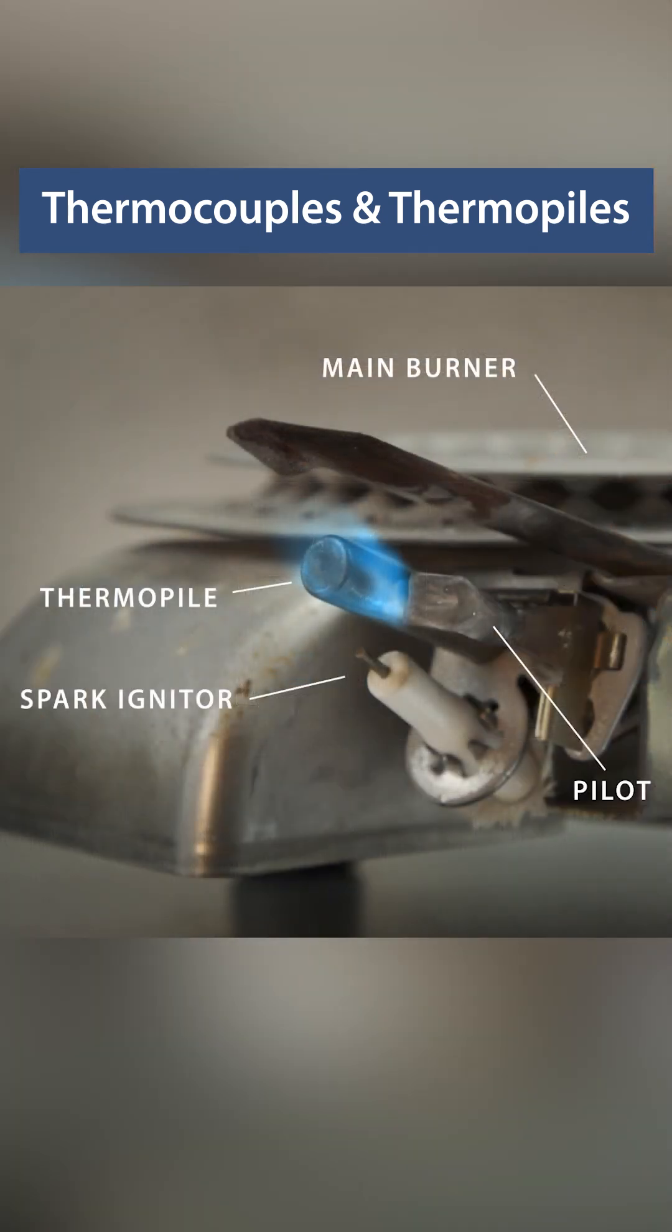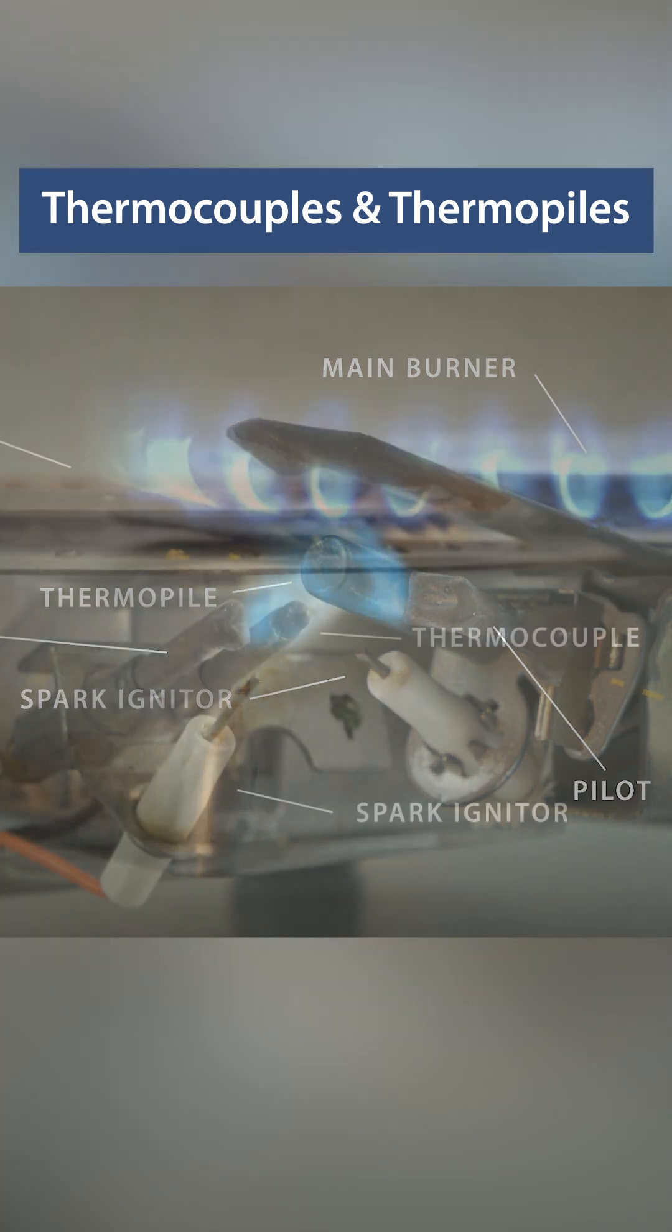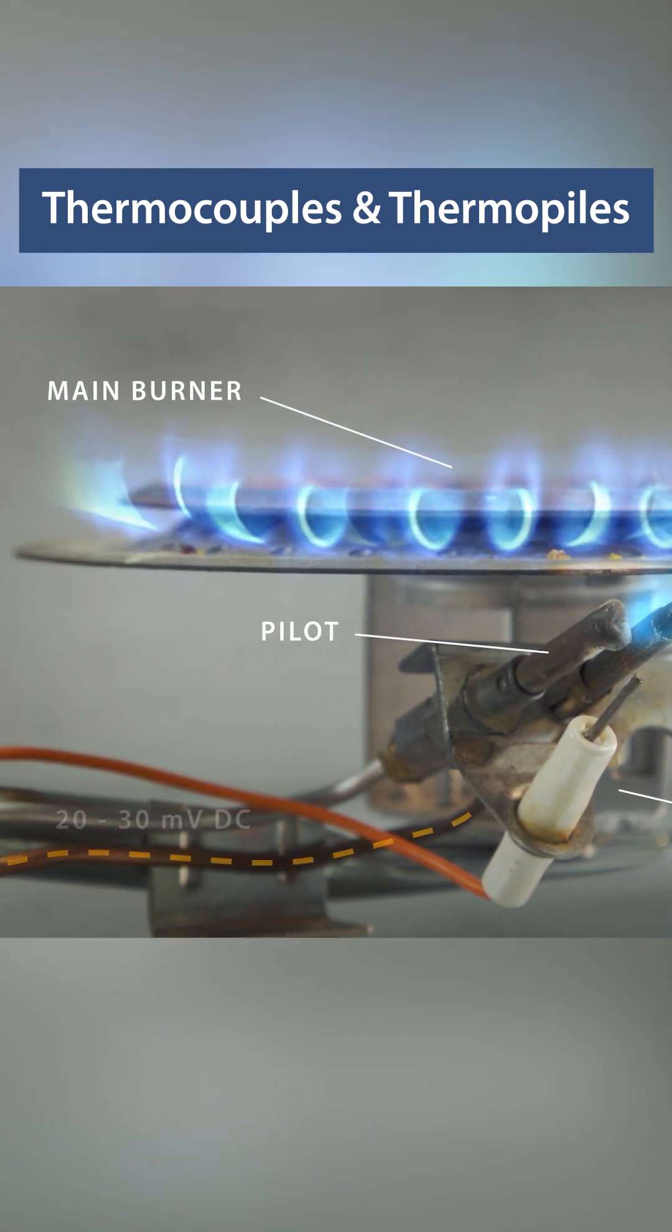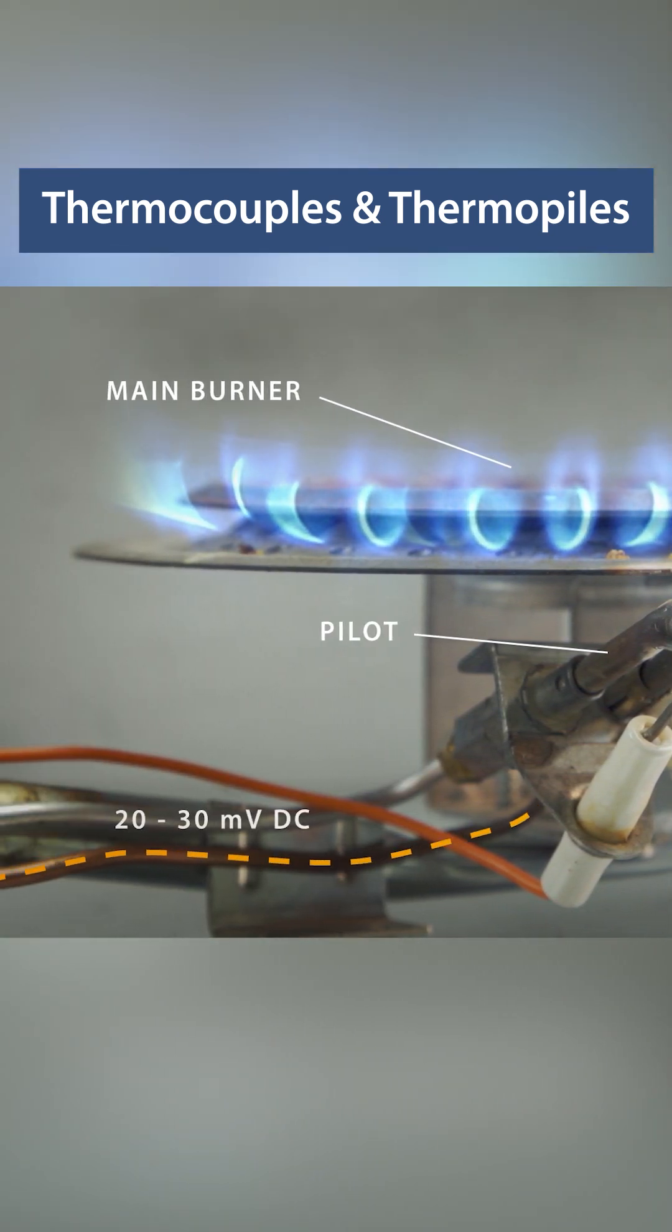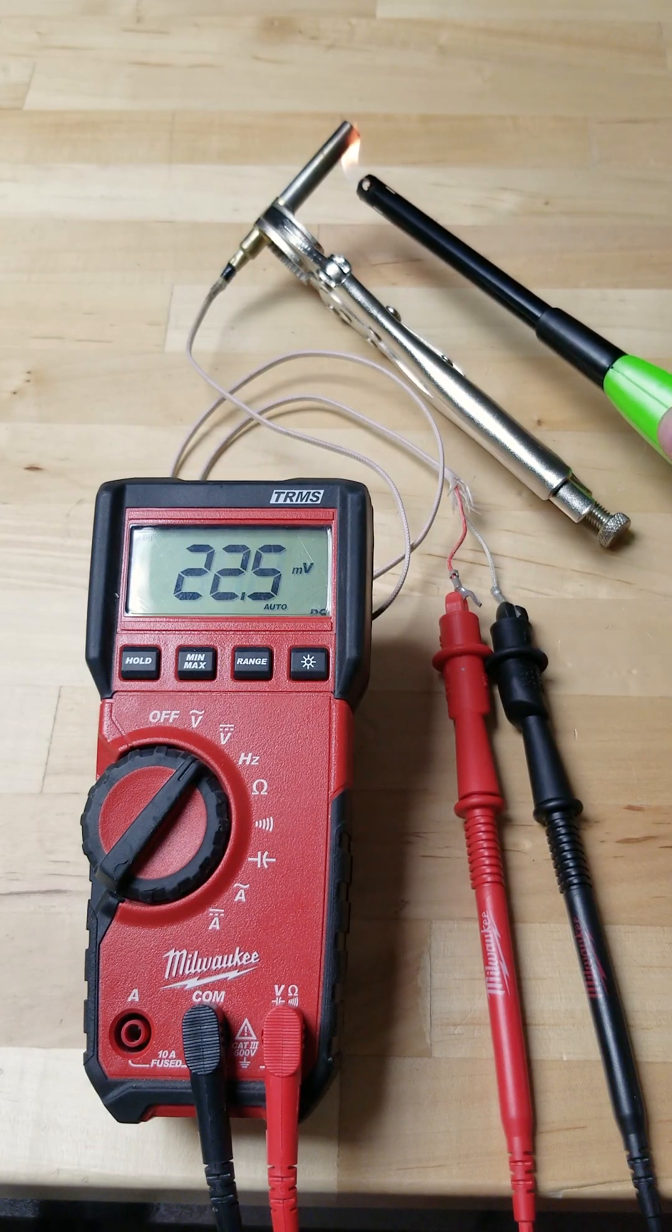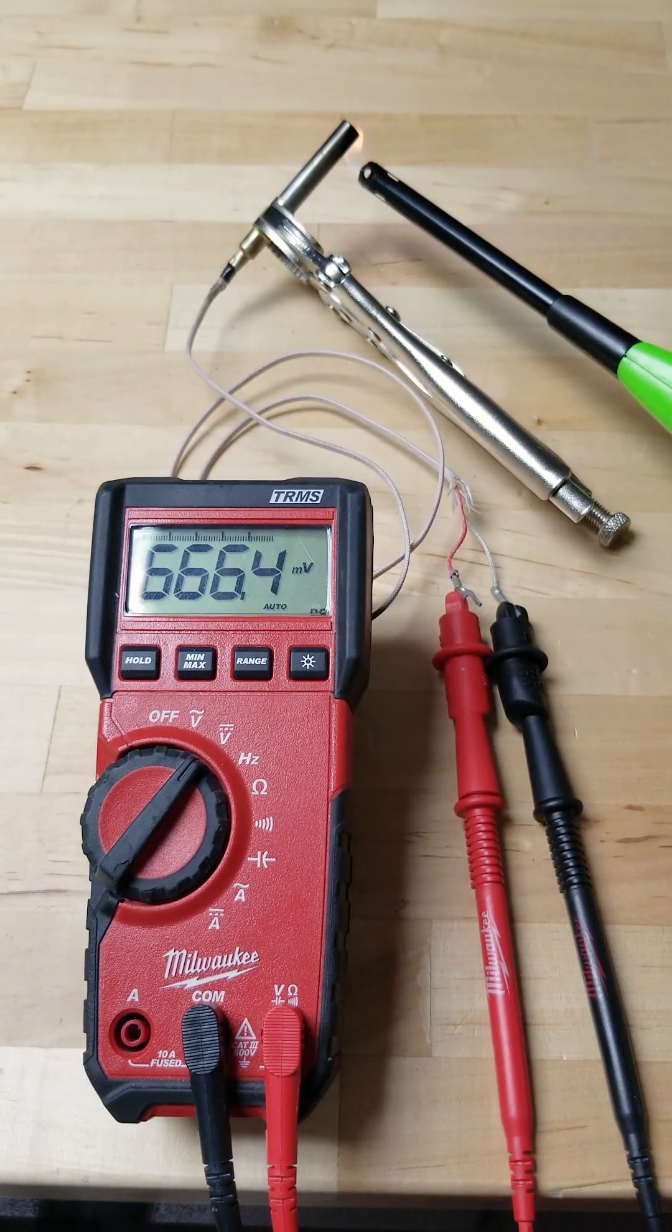Inside are two dissimilar metals that produce a small amount of voltage when heated by the pilot flame. Thermocouples are smaller and produce about 20 to 30 millivolts. A thermopile is several thermocouples bundled together and will produce up to 750 millivolts.